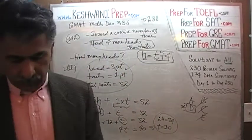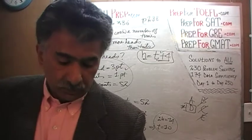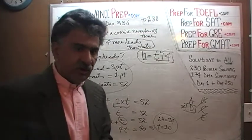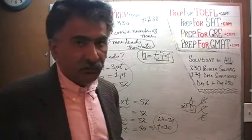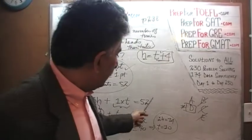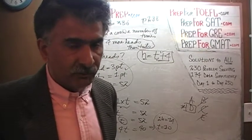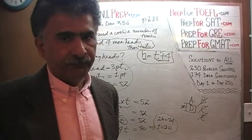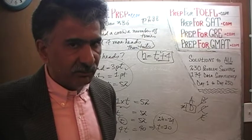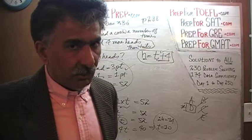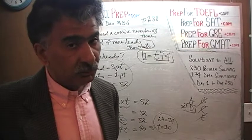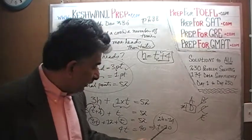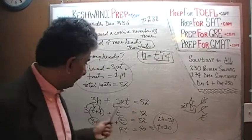The point we're making here is that, as I always point out, the two statements never contradict each other — they always substantiate each other. We found from the first statement that T = 10 and H = 14, and that's exactly what the second statement tells us as well. If you get contradictory results, something has gone wrong in your work.